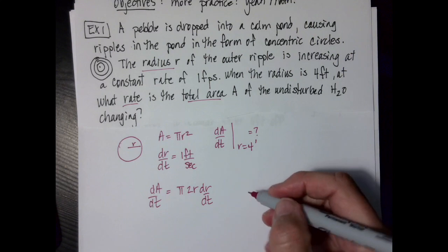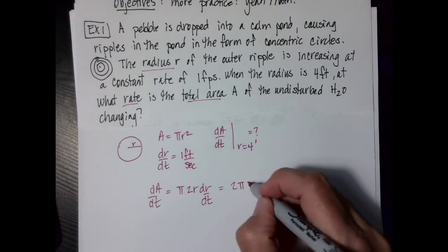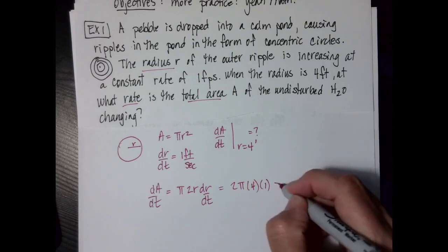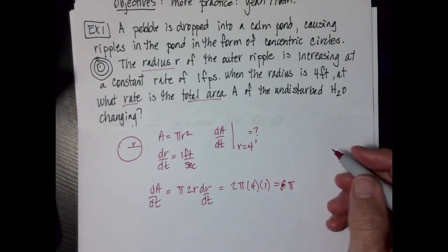And now if I substitute in what I know, here is my 2 pi. My radius is four, and my dr dt is equal to 1. So this is just going to be 8 pi. I'm done.